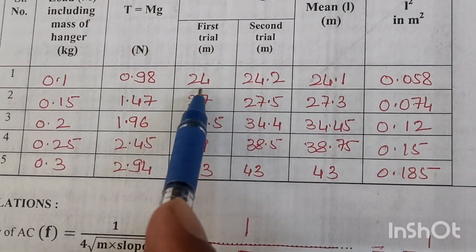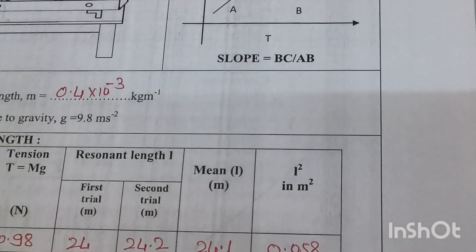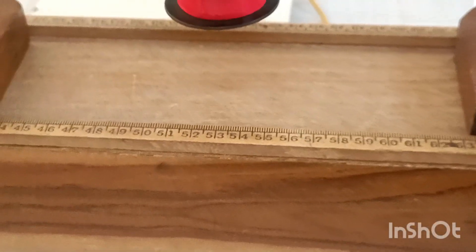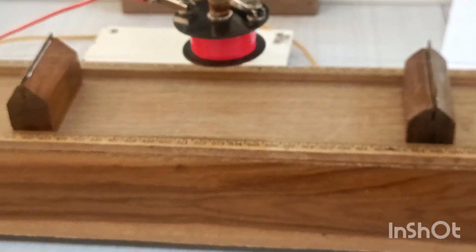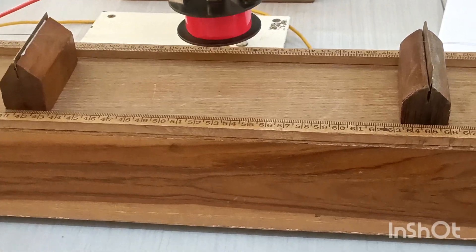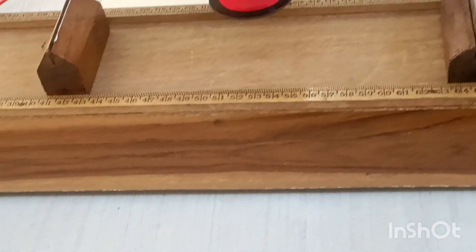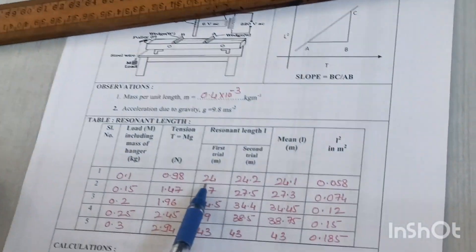The length is found to be 24 centimeters. Here, the wire vibrates in unison with the frequency of AC, producing resonance where a maximum width loop is formed. The length corresponding to this resonance is called the resonating length, which is 24 centimeters.